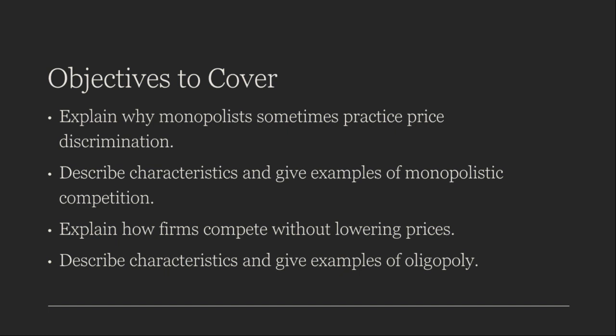Now let's shift our focus to monopolistic competition. This market structure is characterized by a large number of firms, each producing slightly differentiated products. Key characteristics include: first, product differentiation — firms in monopolistic competition produce goods that are similar but not identical, for instance the various brands of toothpaste available in the market. Second, there are low barriers to entry, so new firms can enter the market with relative ease as there are no significant barriers preventing them from doing so.